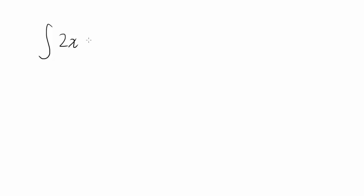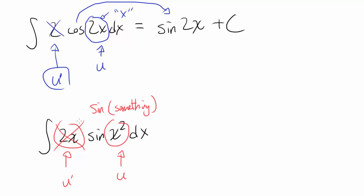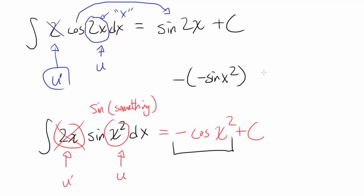Now let's consider the integral of 2x times sine of x² dx. In this case, our u is x² — what we're taking sine of — and u-prime is 2x. We have all ingredients: u-prime multiplied by sine of u. We think of u-prime as going away and integrate sine of something, which gives negative cosine of something — negative cosine of x² plus C. We can verify: differentiating negative cosine of x² gives negative times negative sine of x² times 2x, which equals 2x times sine of x². Correct!